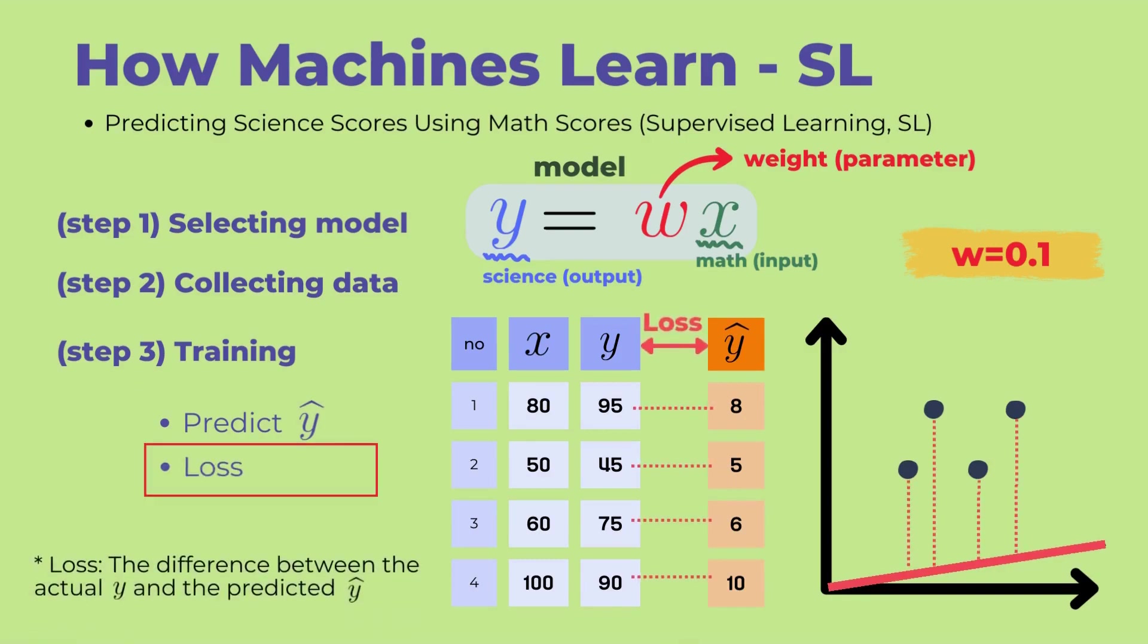The second step in the training phase is to calculate the loss. The loss refers to the difference between the actual Y value and the predicted Y value. As shown in the table, for the first student, the actual science score is 95, while the predicted value is 8, resulting in a very large loss. Similarly, for the second student, the actual science score is 45, but the predicted value is 5, also leading to a very large loss. A large loss is not desirable, as the goal of learning for the model is to reduce the loss. The length of the red dotted lines in the graph on the right represents the magnitude of the loss.